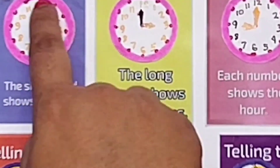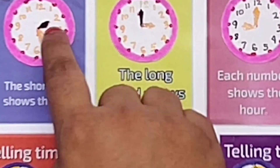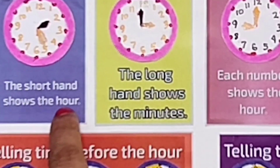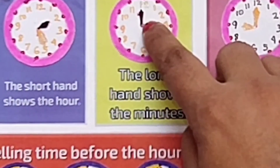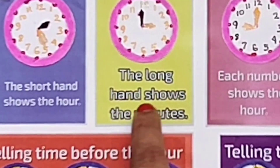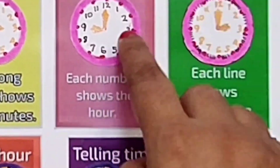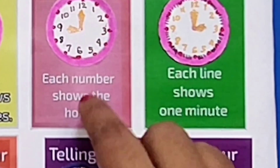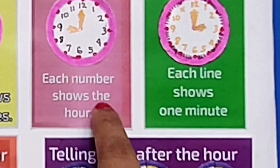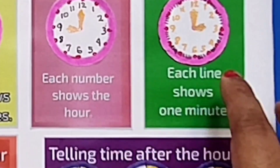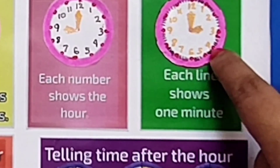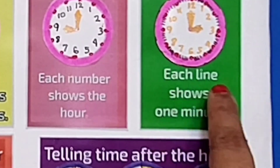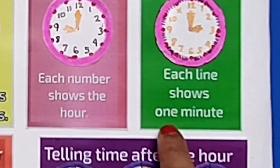In this clock, I have highlighted the short hand. The short hand shows the hour. Here, the long hand is highlighted — the long hand shows the minutes. Here, I have highlighted the numbers; each number shows the hour. In this clock, the lines are highlighted; each line shows 1 minute.